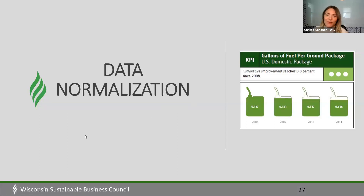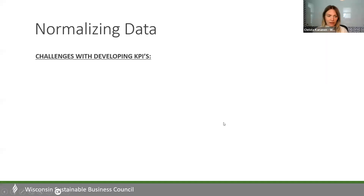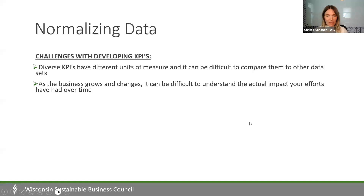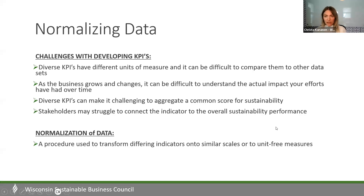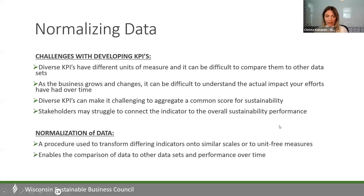I'll pick up from where Jesse left off and talk a little bit about data normalization. When we say normalization, we essentially mean adjusting your metrics to a consistent scale. That will allow you to account for external forces — such as increased production or changing costs — and allows you to evaluate your performance over time.